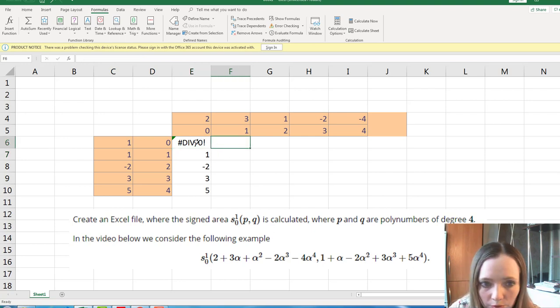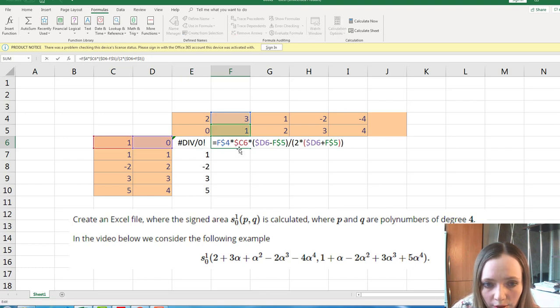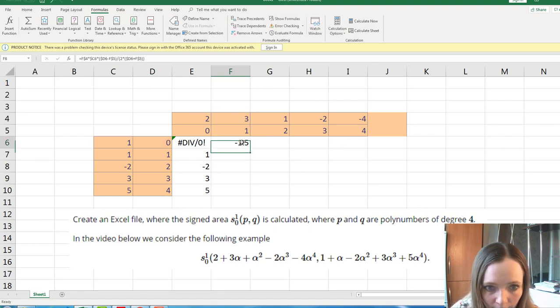Now if we repeat, we will get correct formula. F4 times c6. D6 minus f5. D6 minus f5 over 2 times d6 plus f5. So everything's right. Now we repeat it everywhere.